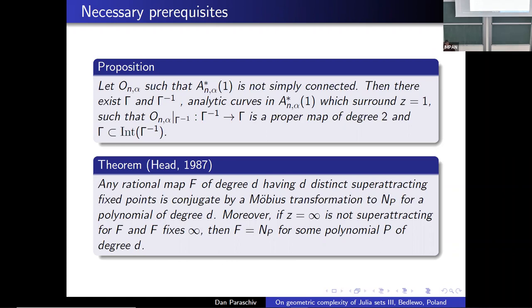Before proceeding to the proof of the theorem, we need two results. The first is mine: assume that the immediate basin of attraction of one is not simply connected; then there exist two analytic curves in the immediate basin of attraction, called γ_{−1} and γ, such that γ_{−1} maps to γ with degree two, and γ lies in the interior of γ_{−1}. The second critical result comes from a paper by Palais, attributed to a PhD thesis of Head from 1987: for any rational map of degree d with n distinct super-attracting fixed points, it is conjugated by a Möbius transformation to a map obtained by applying Newton's method to a polynomial, if z = ∞ is not super-attracting and ∞ is a fixed point.